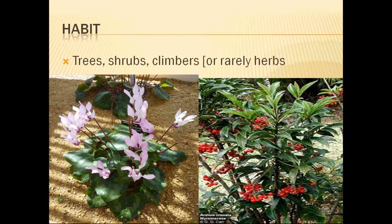These families generally have trees, shrubs, climbers, or herbs. The habit of plants in this family is generally trees or shrubs, as we are going to be seeing in the photographs. There are small to middle-sized trees and undershrubs, as well as small shrub plants. This is the habit we are looking at in the Myrsinaceae family.